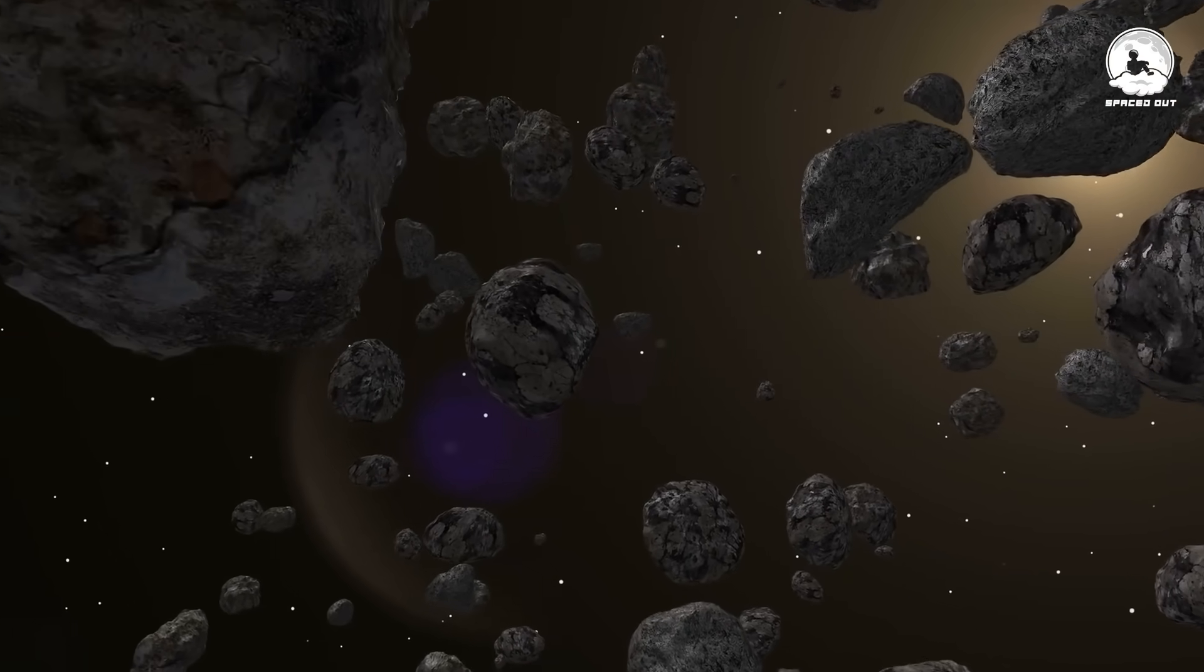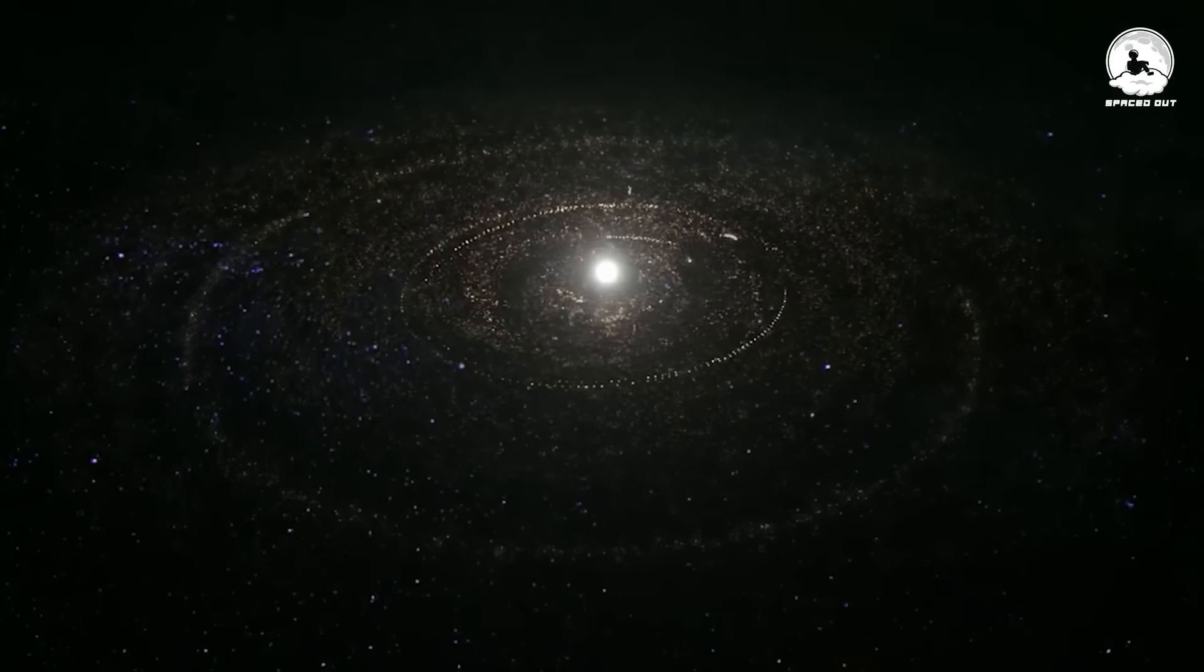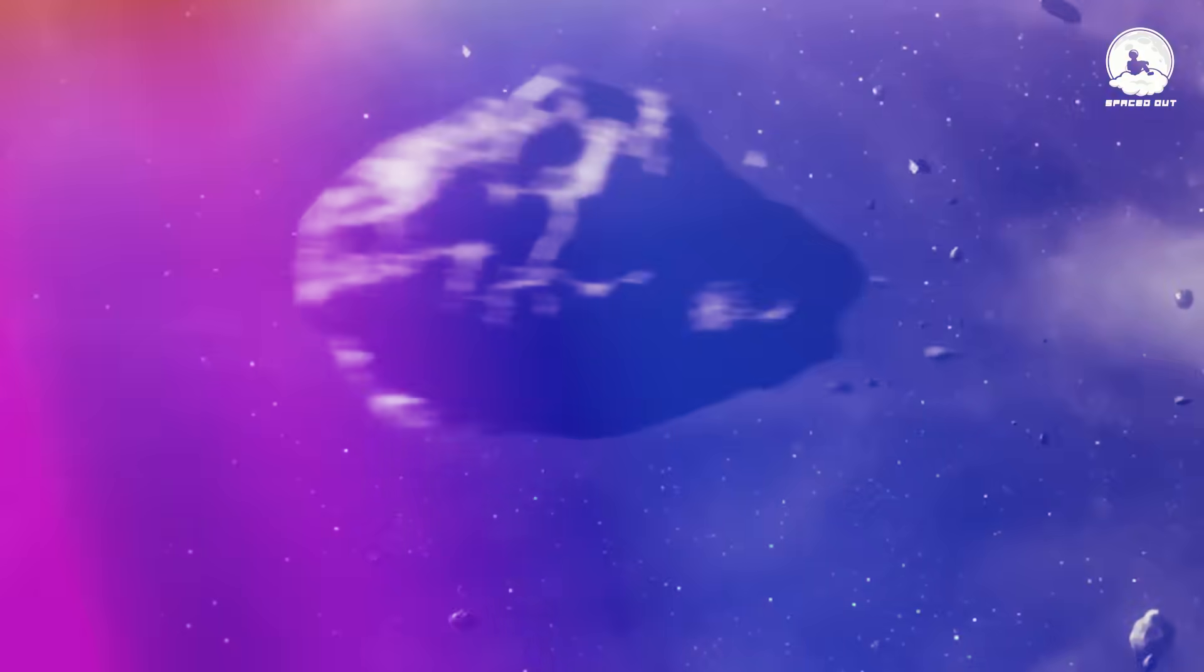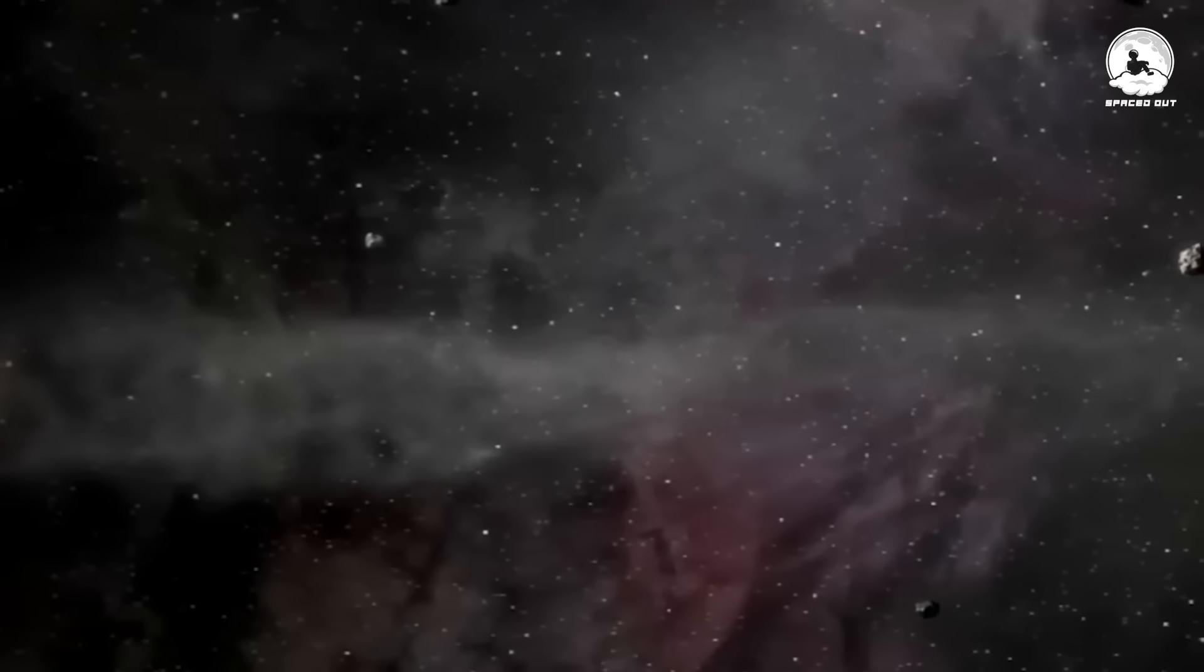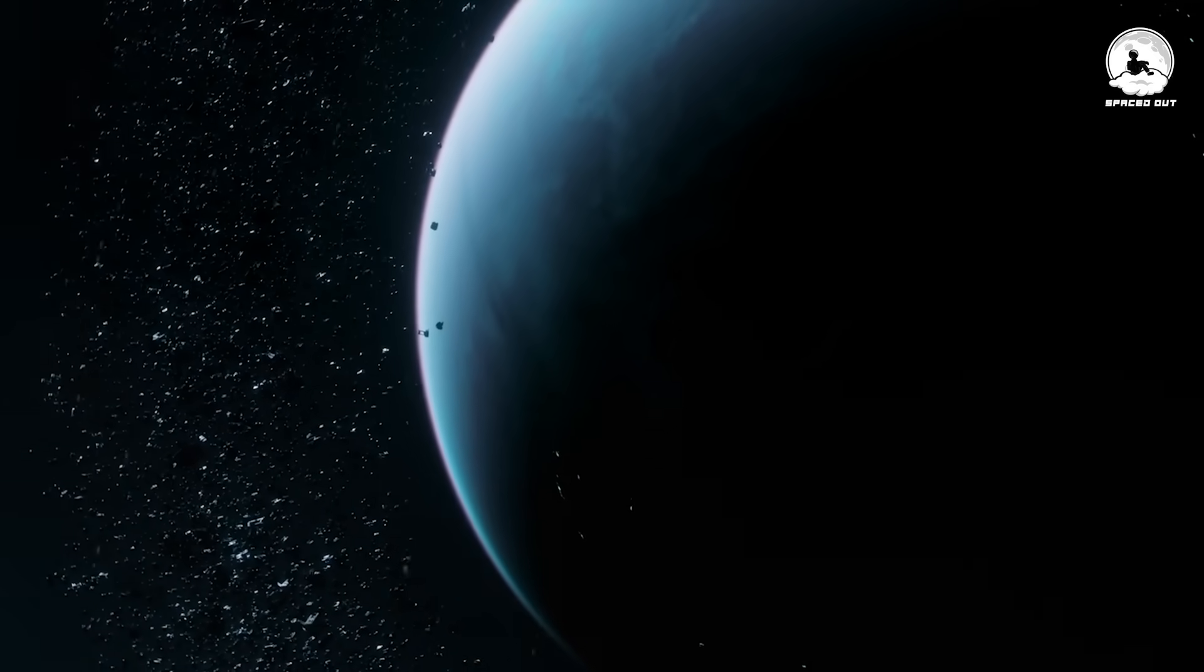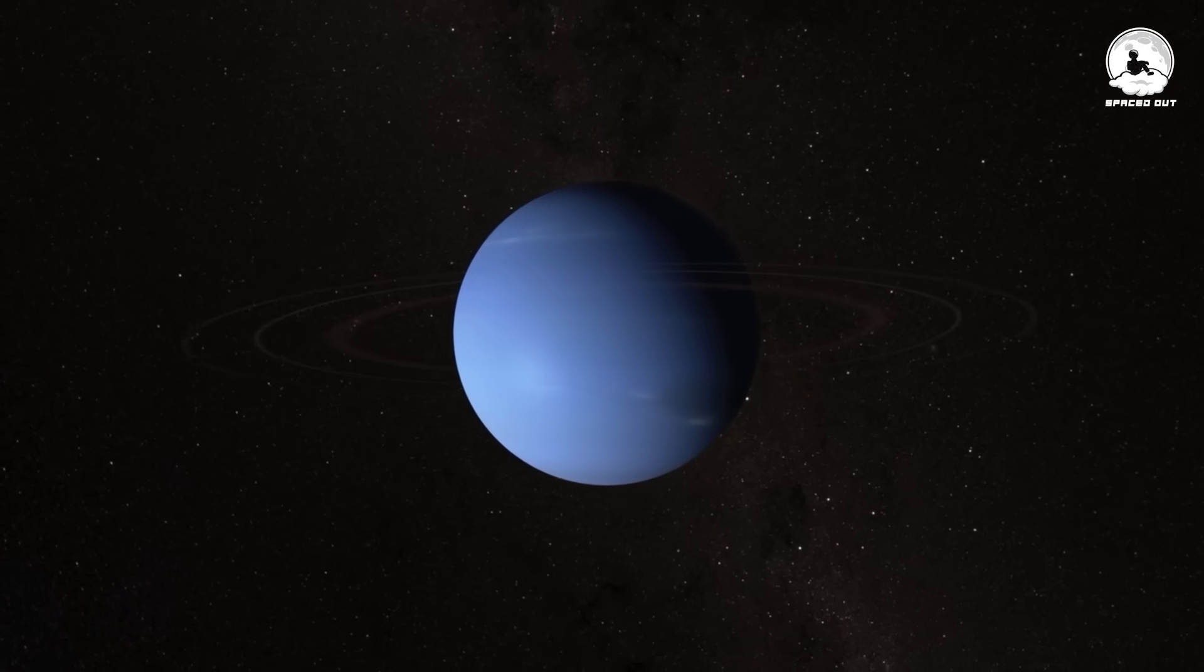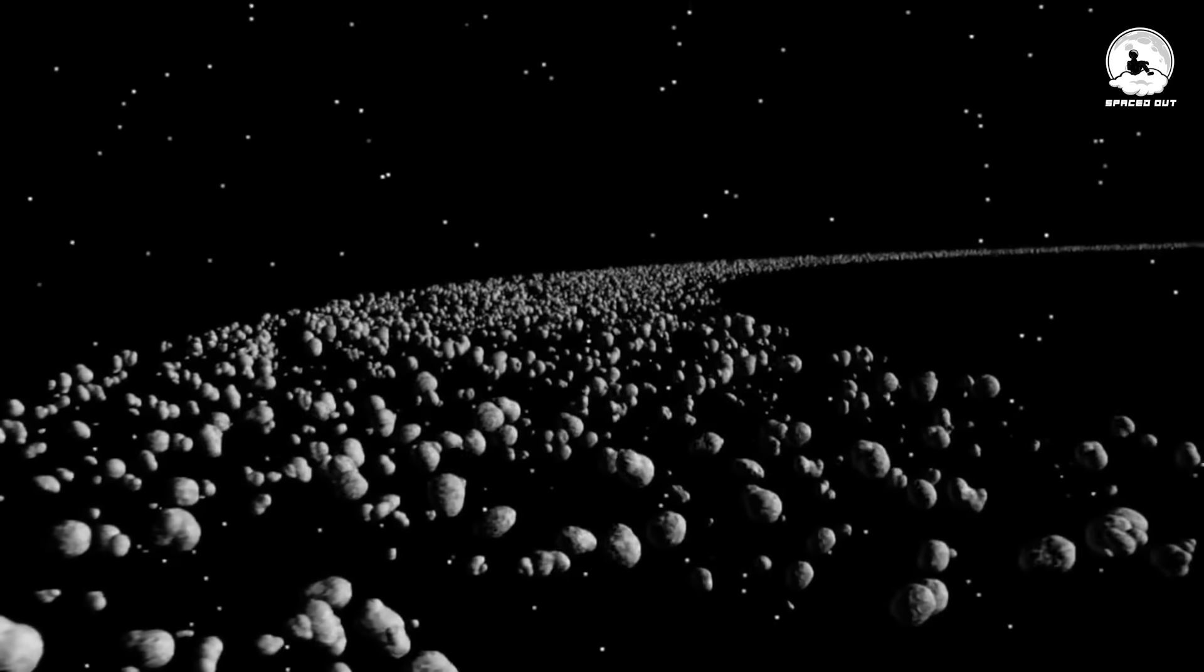NASA states that the objects of the Kuiper Belt are known as the leftover materials from the solar system's formation about 4.6 billion years ago. The objects, although vast, are so small that they could not come together to form a planet. However, the gravitational pull of Neptune's orbit prevented them from coalescing into a large planet, hence carving out the vast space of the Kuiper Belt.